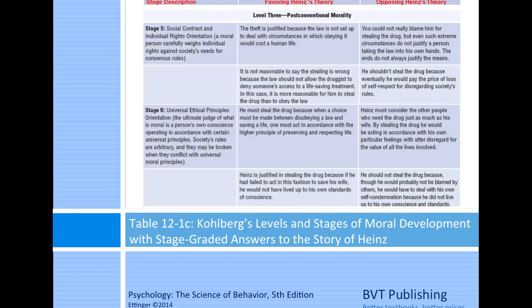Stage six is universal ethical principles orientation—the ultimate judge of what is moral is a person's own conscience operating in accordance with universal principles. Society's rules are arbitrary and may be broken when they conflict with universal moral principles. He must steal the drug because when a choice must be made between disobeying a law and saving a life, one must act in accordance with the higher principle of preserving and respecting life. Heinz is also justified because failing to act would mean not living up to his own standards of conscience.